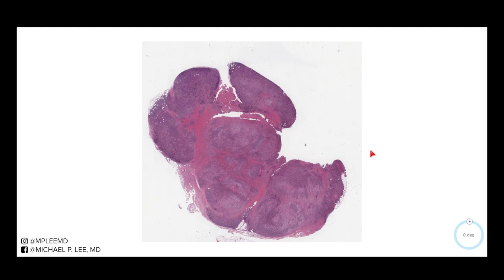So this is Rosai-Dorfman disease. This is usually a disorder that involves lymph nodes, but when it presents occasionally in the skin, we call it Rosai-Dorfman because it's just easier to say than sinus histiocytosis with massive lymphadenopathy. These lesions are large masses, and let me pull up a clinical picture so you can see what we're talking about here.